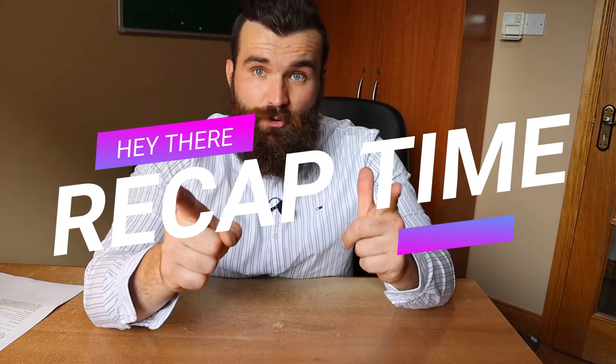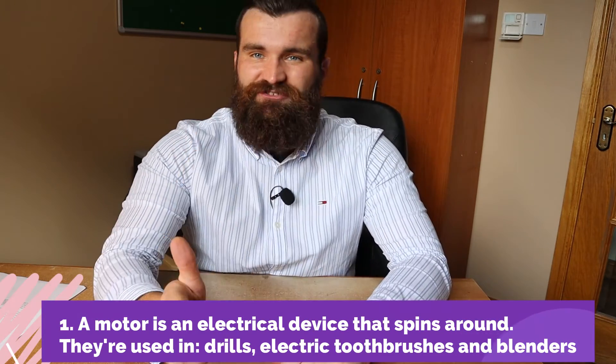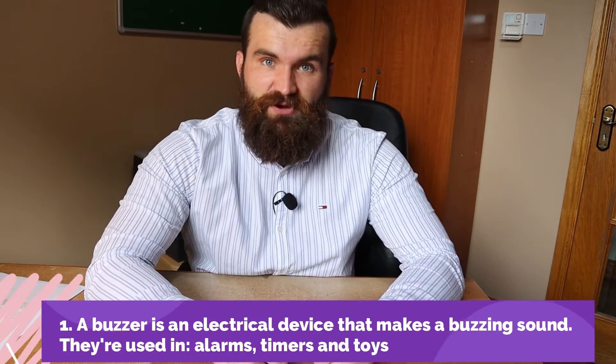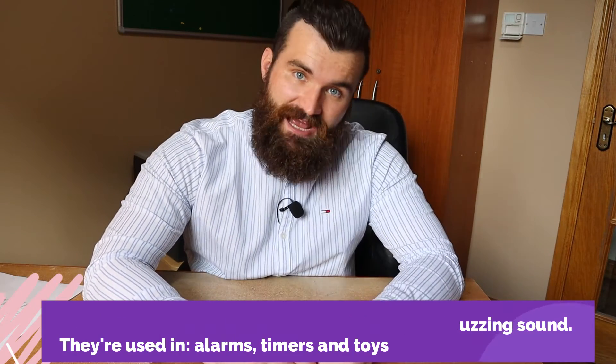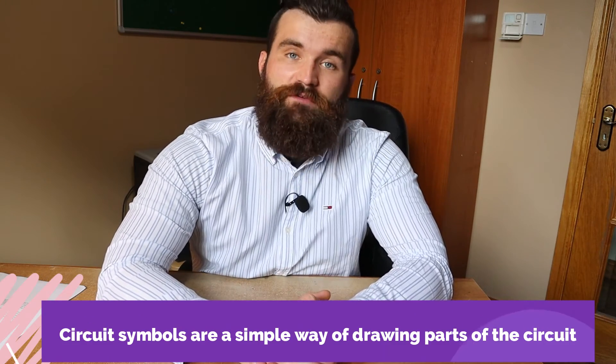Guess what time it is? Recap time! When we add a motor to a circuit it spins round and round. They are used for drills, electric toothbrushes, blenders and pretty much anything that's electrical and spins. When we add a buzzer to the circuit it makes a buzzing noise. Buzzers are used in alarms, timers and some kinds of toys. Circuit symbols are a quick and easy way of drawing parts of the circuit.